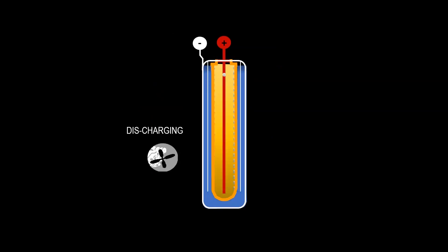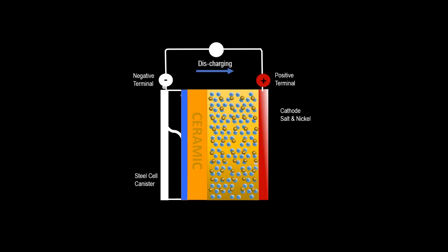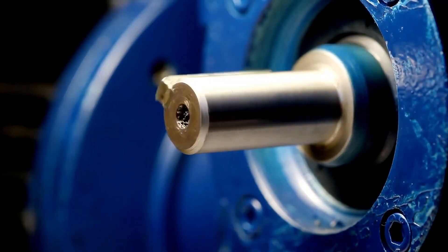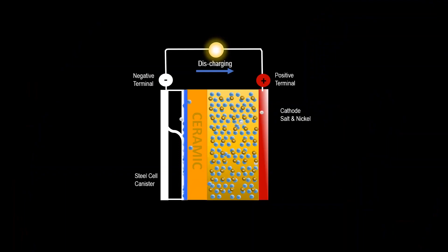And during discharge, electrons flow back to the positive terminal while sodium ions transfer back through the ceramic tube to the cathode section, joining once again with the chloride and transforming back into salt. The nickel is reduced back to metallic nickel.